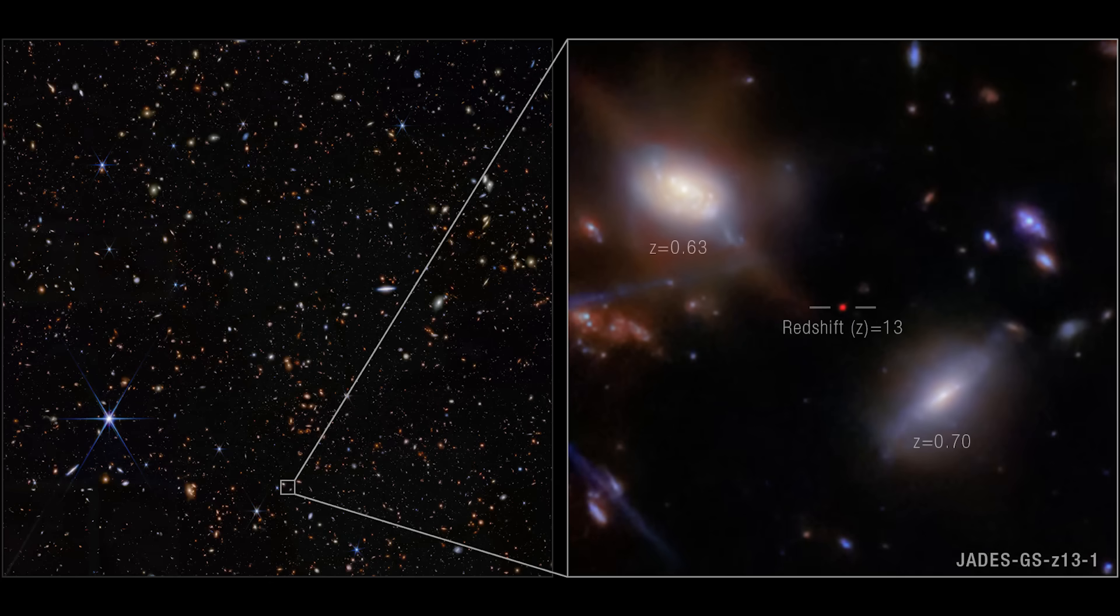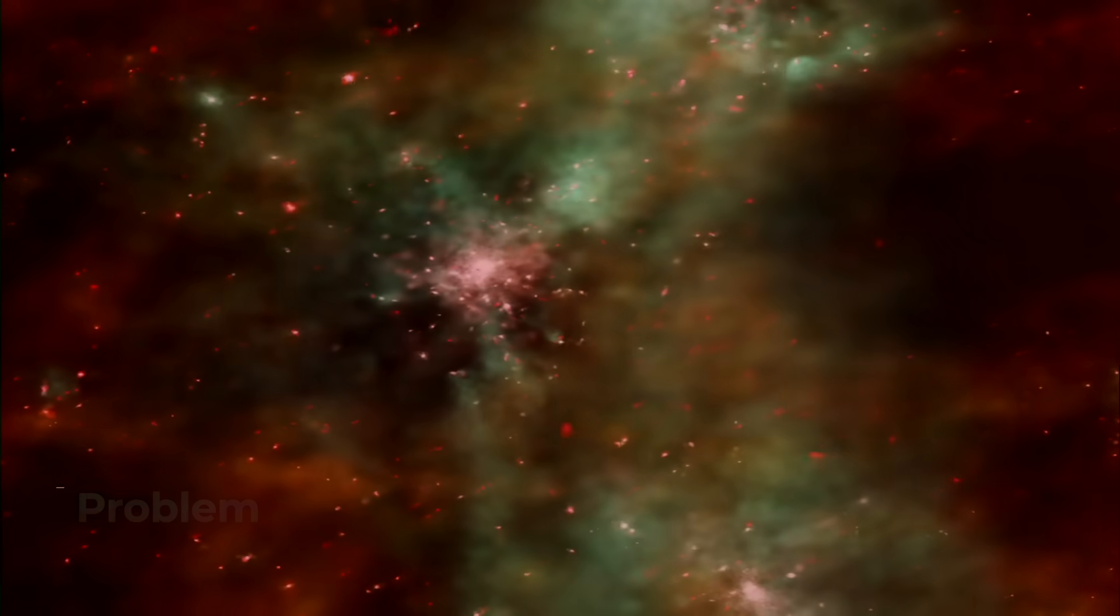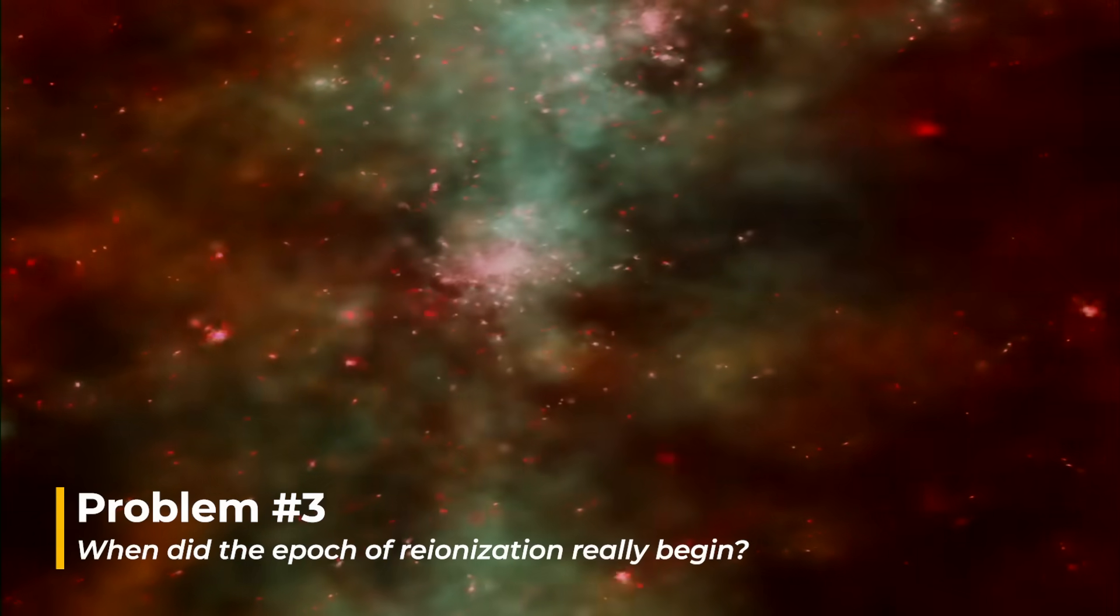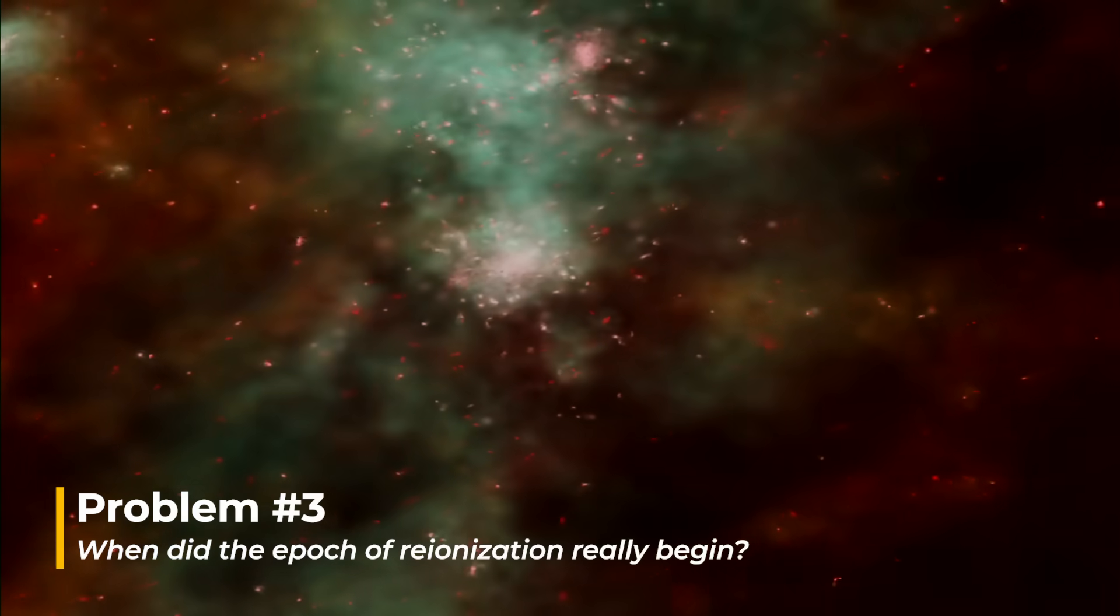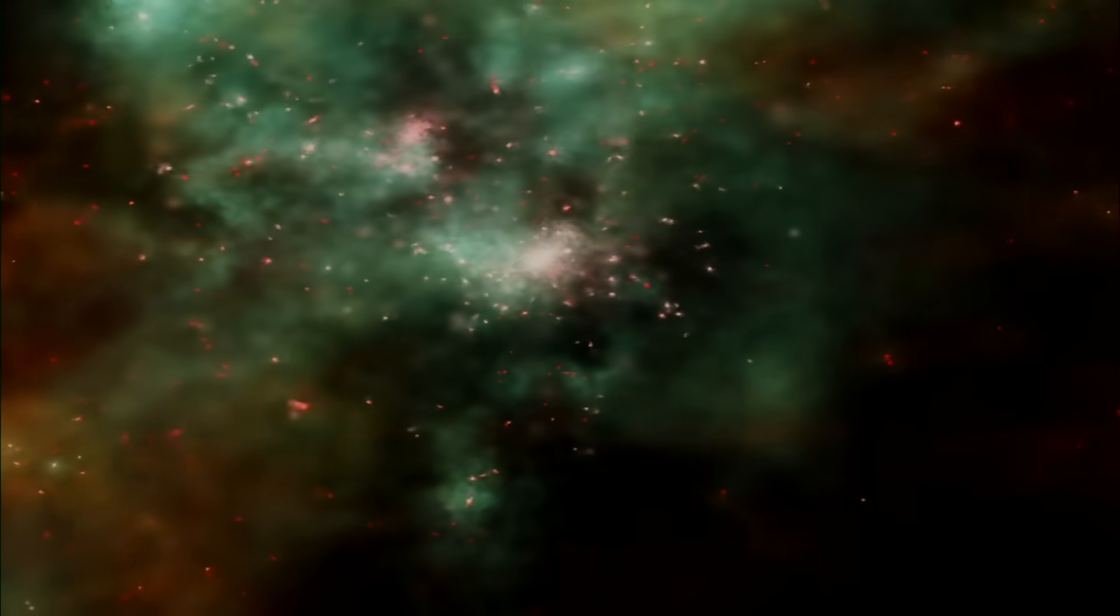Evidence for this comes from galaxies like JADES GS-z13-1, observed at a redshift of 13, which already shows signs of existing in a fully ionized region. This tells us that the reionization process may have started earlier than previously believed, and that these early galaxies were especially good at reheating the universe with their energetic radiation.